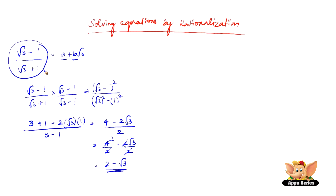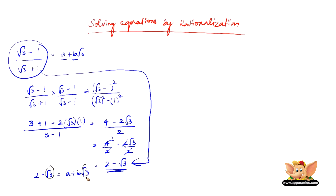So now 2 - √3 is the simplified form of (√3 - 1) / (√3 + 1). Now let us equate 2 - √3 to a + b√3. Since √3 and √3 are the same, comparing coefficients, b = -1 and a = 2. Hence the values of a and b are found: a = 2 and b = -1.